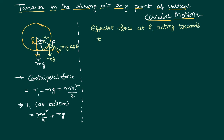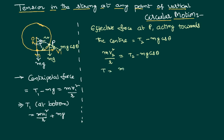The effective force at point P acting towards the center is T2 minus Mg cos theta, because T2 acts towards the center (positive) and Mg cos theta acts away from the center (negative). This acts as the centripetal force at that point. If the velocity at P is V2, we write Mv2² / R = T2 − Mg cos theta. Therefore, the tension at point P is T2 = Mv2² / R + Mg cos theta.